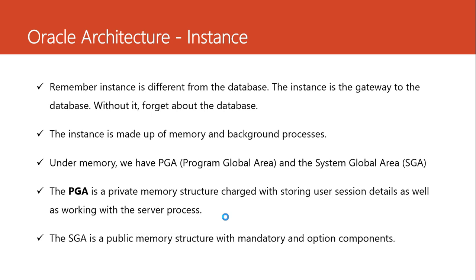We are going to begin with the instance. Remember, the instance is made up of memory and the background processes. Under the memory, we have two things: the PGA and the SGA — those are the two memory structures. The PGA is a memory structure and its work is to ensure that the user gets their requests handled. It works with the server process to ensure that the client's requests are satisfied.